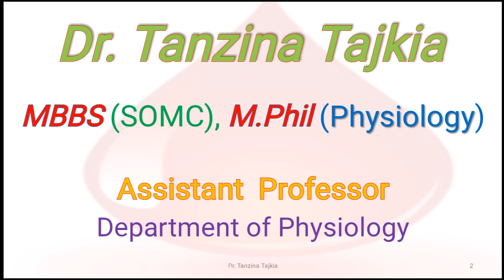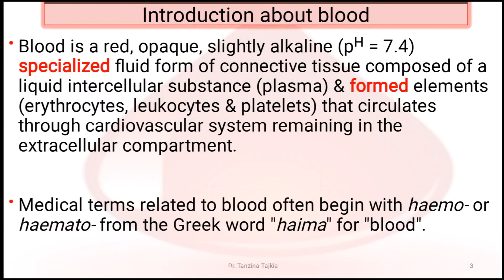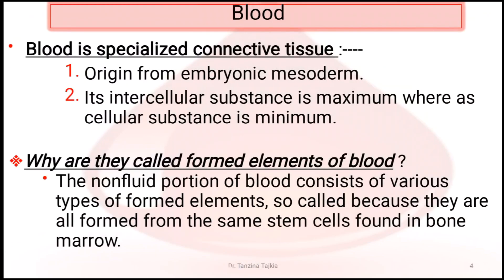Today's lecture is about the introduction of blood. Blood is a red, opaque, slightly alkaline, specialized fluid form of connective tissue, which is composed of a liquid intercellular substance — that means plasma — and formed elements that circulate through the cardiovascular system, remaining in the extracellular compartment. In medical terms related to blood, words often begin with 'hemo' or 'hemato', which is the Greek word meaning blood.